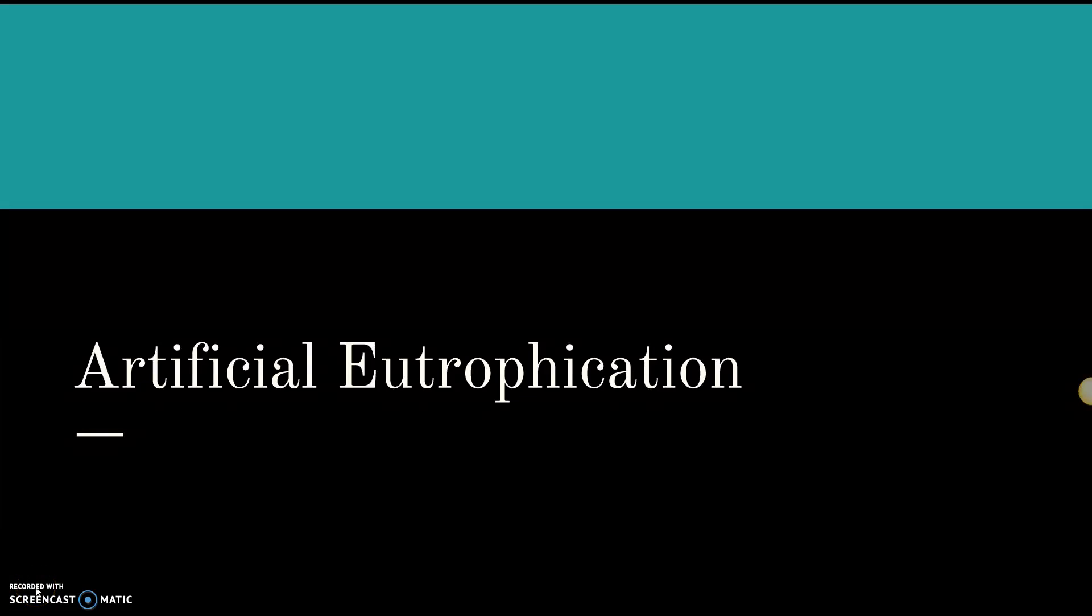In this video we're going to talk about the process of artificial eutrophication. This is something that only affects aquatic ecosystems. There is a natural component to it. There is a thing called natural eutrophication. So this does occur naturally, usually in our spring and summer times.